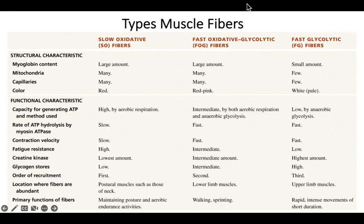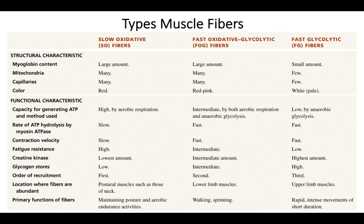To understand muscle fiber types, you need to understand ATP production first. Once you understand the three forms of ATP — short-term versus long-term — the fiber types make much more sense. You'll be asked about what kinds of fibers different muscles have and their properties. If you understand aerobic respiration and glycolysis, this should all make sense. Animations are your friend — let me know if you have any questions.